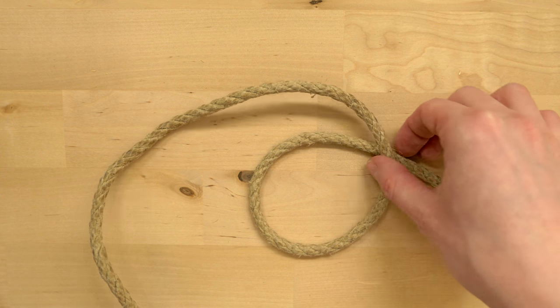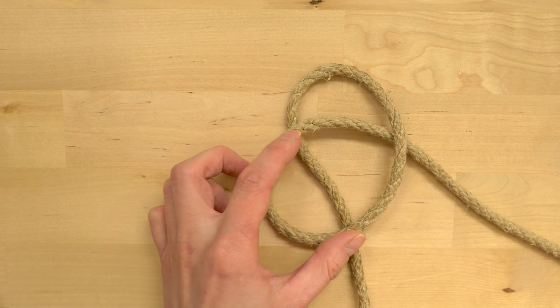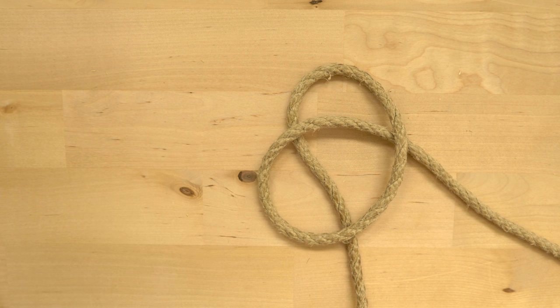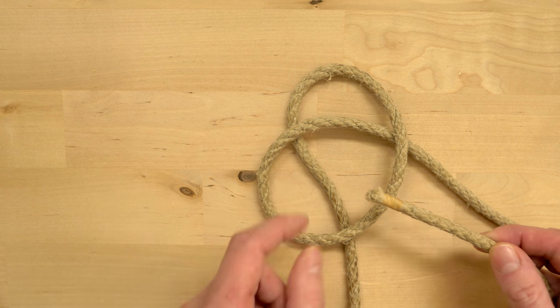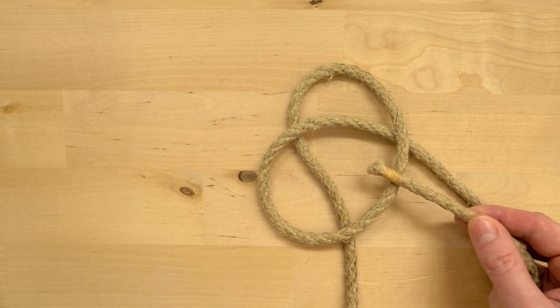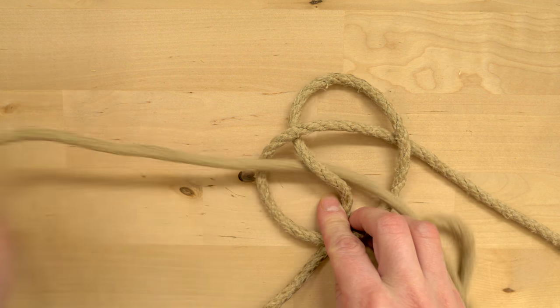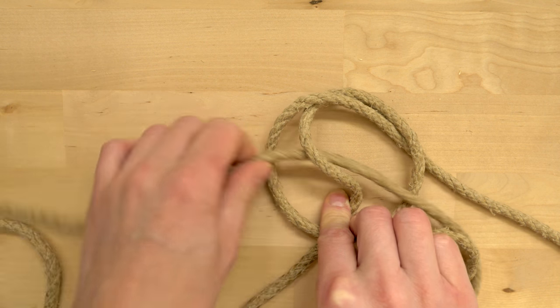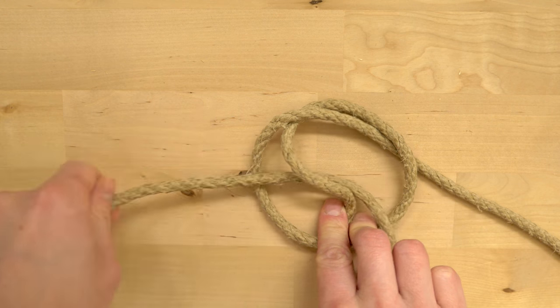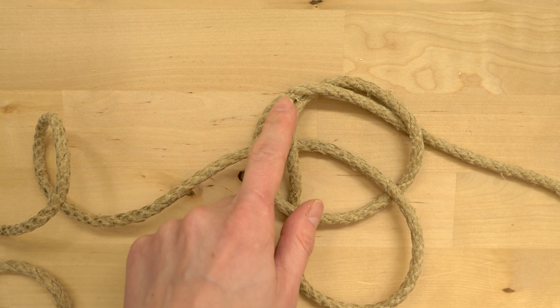We're then going to travel under this loop with the same end, basically going under two. We're then going to pick up the end and split this loop by going over, under, over. And with this we have one section done.